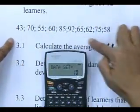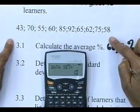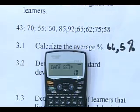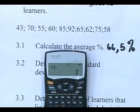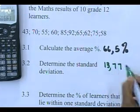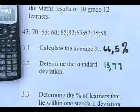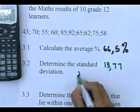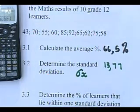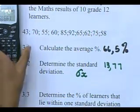Now you've keyed in all your data. The only thing you press on this calculator is the Alpha button. Press Alpha 6, because that is the standard deviation symbol — that's why I pressed Alpha 6. Then press equals. You should have on your screen that the standard deviation is 13.77.